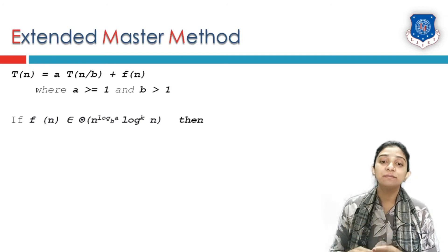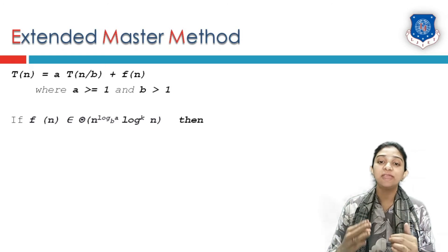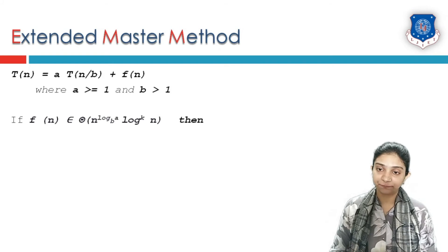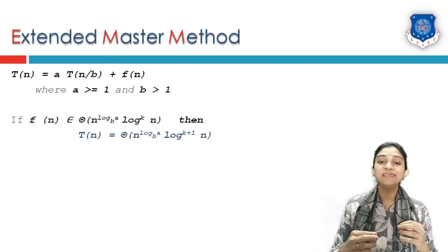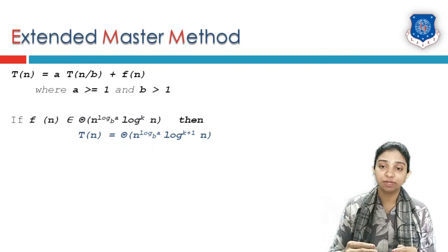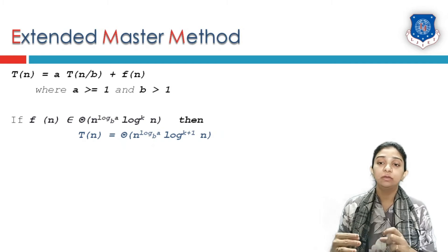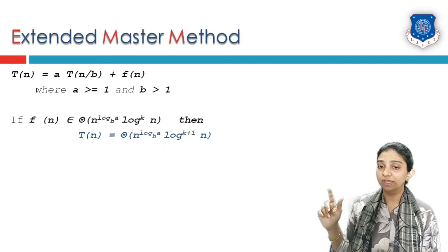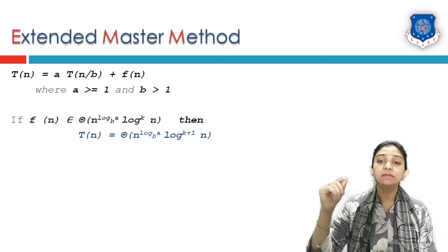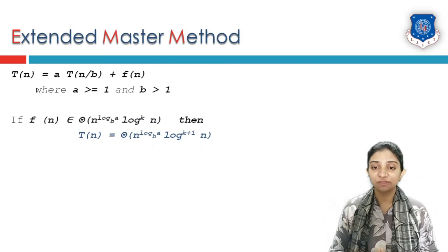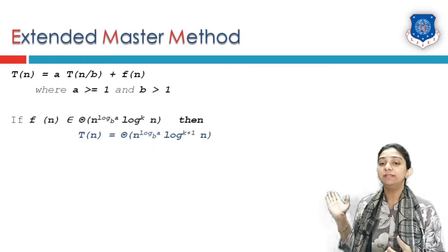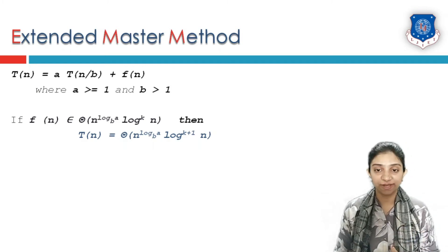In the extended master theorem, if f(n) is of type n^(log_b(a)) · log^k(n), then T(n) = Theta(n^(log_b(a)) · log^(k+1)(n)). Simply put, we increase the power of the log term from k to k+1, with no other changes to find the complexity of the recurrence relation.